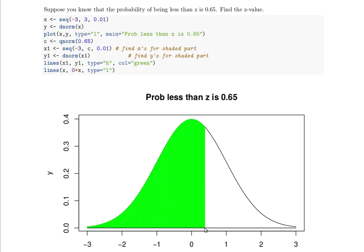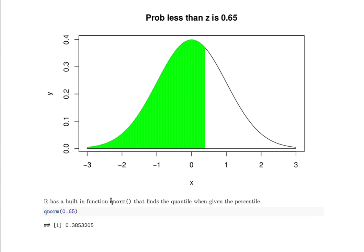We can find this with the QNORM function. So this QNORM function finds the quantile, the Z value, when it's given the percentile. So QNORM of 0.65...